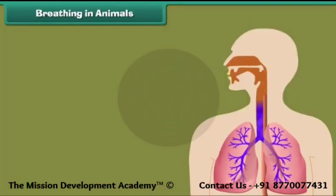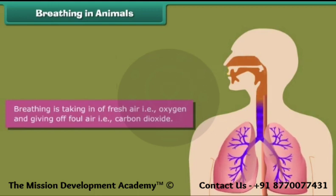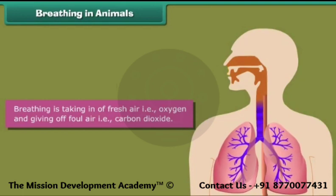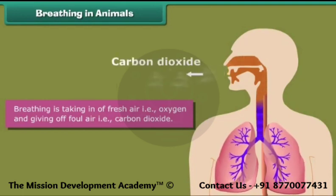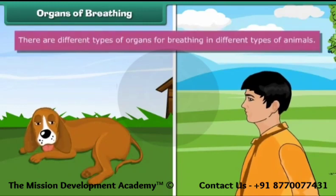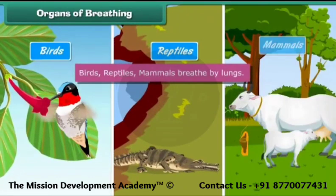Breathing in animals means taking in enough fresh air, that is oxygen, and giving off foul air, that is carbon dioxide. There are different types of organs for breathing in different types of animals.